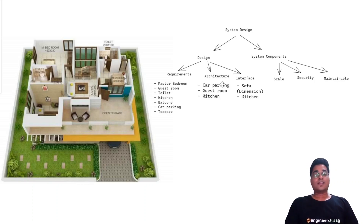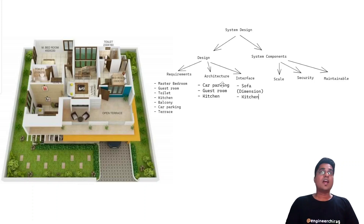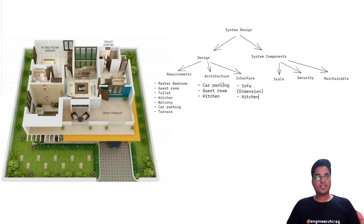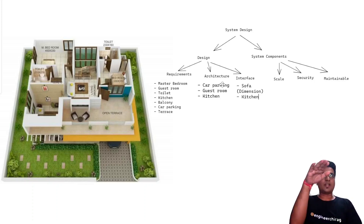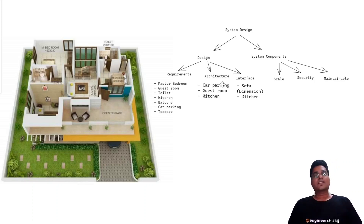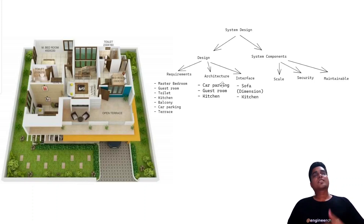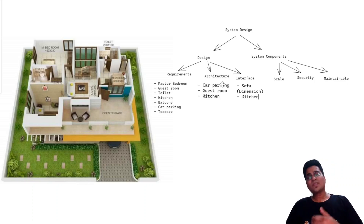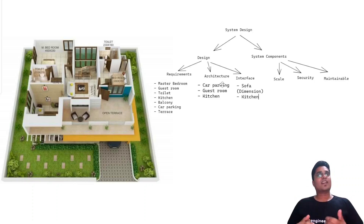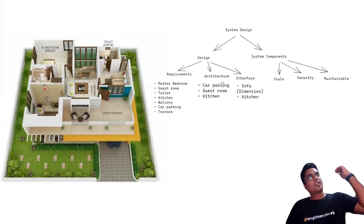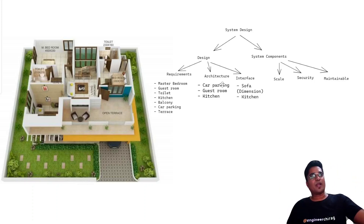This is the design-related part. Second is system components. When we talk about system components, certain things are very important — like scale. We may have three rooms now, but we might want to expand vertically across multiple floors or have more area available. Second is security — the home we have built should be secure. Third is maintainability — the system should be easy to maintain over time.